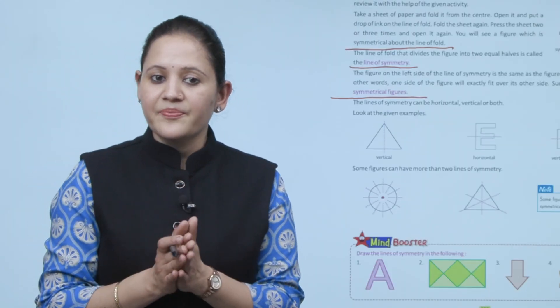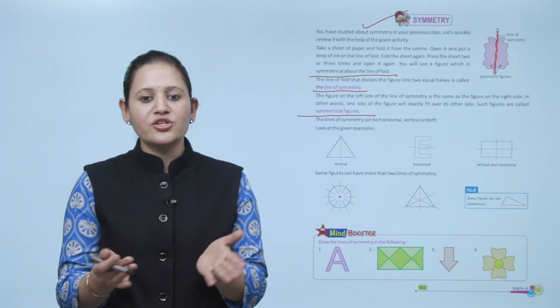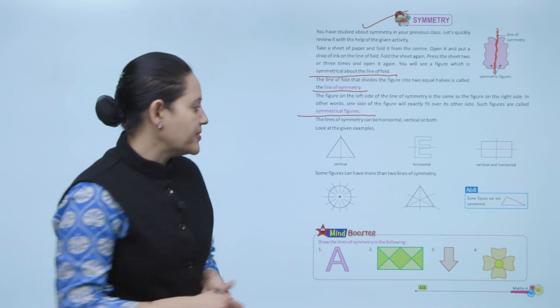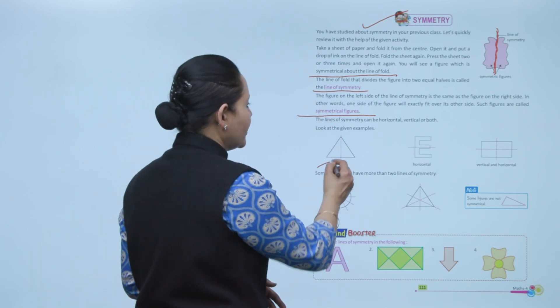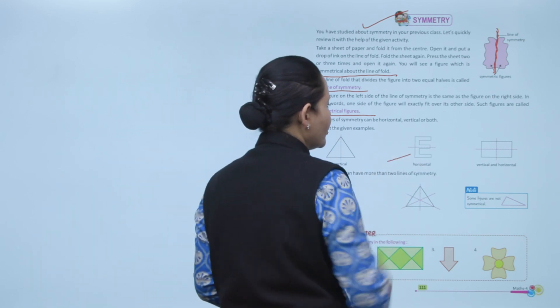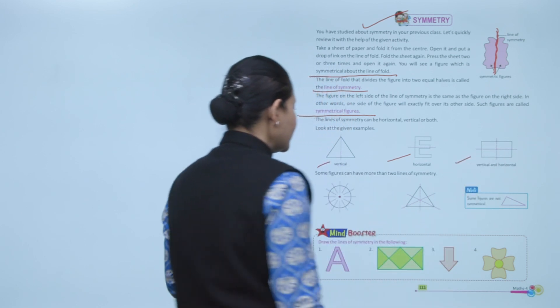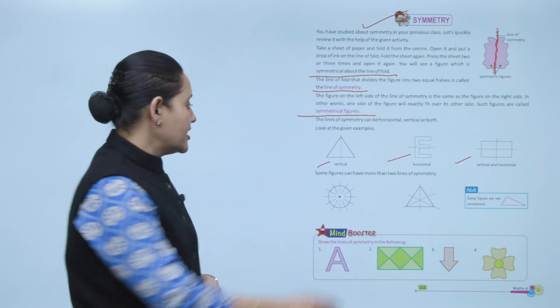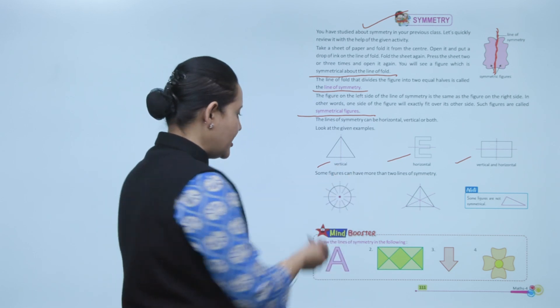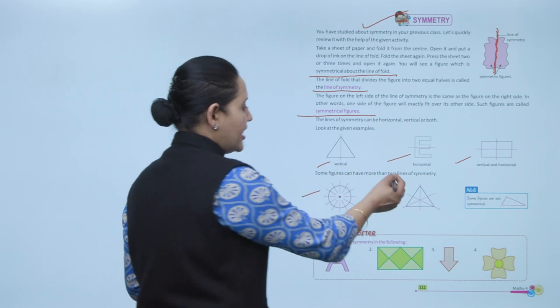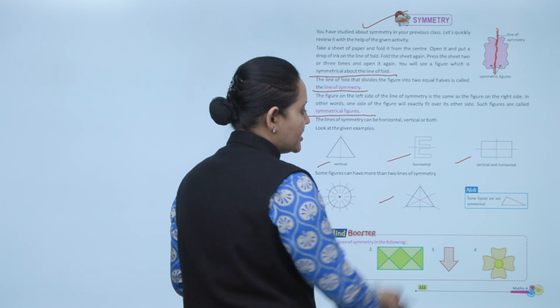The line of symmetry can be horizontal, vertical, or both. Look at the given examples: here the line of symmetry is vertical, and here it is horizontal. Here are two lines of symmetry - one is vertical and one is horizontal. Some figures can have more than two lines of symmetry, like in a circle and equilateral triangle. Some figures do not have a line of symmetry.